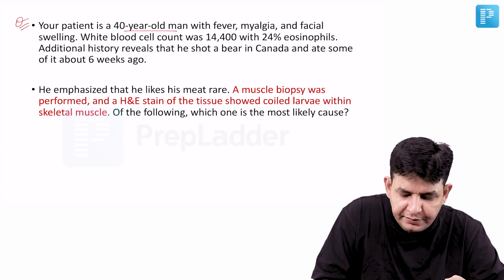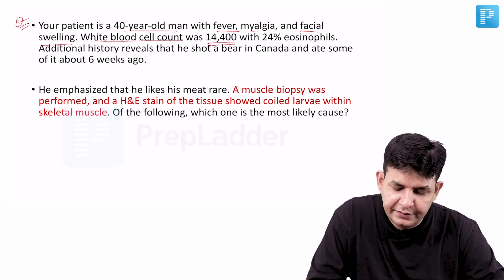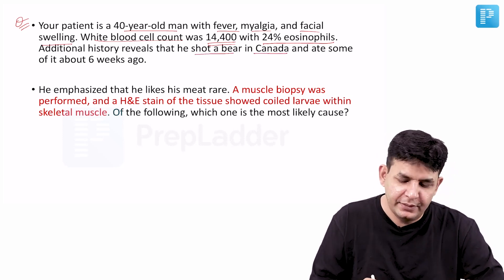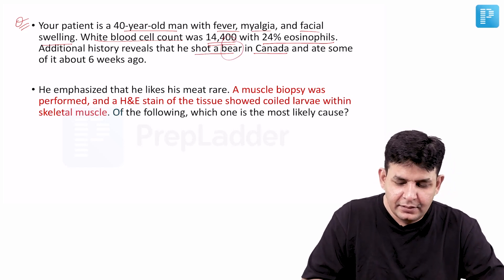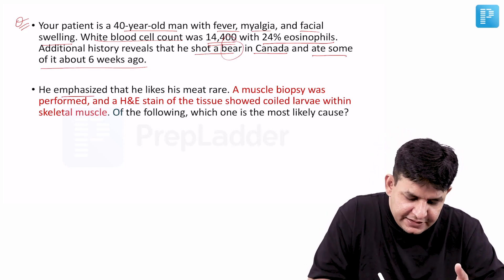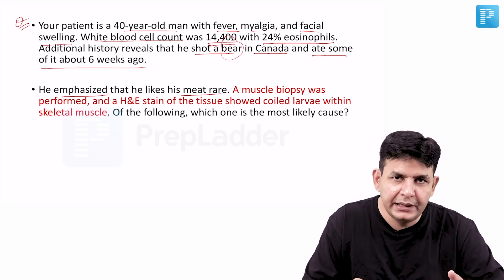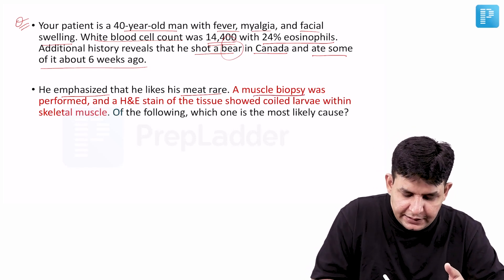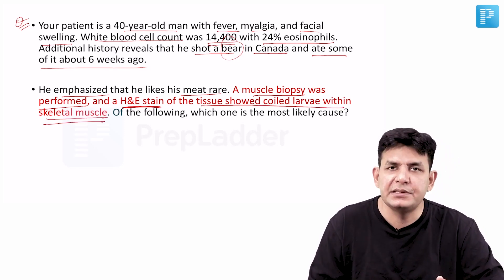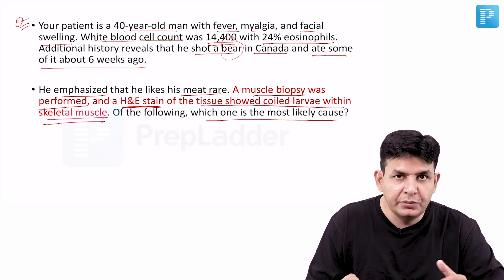Moving to another question: a 40-year-old man presents with fever, myalgia, and facial swelling. His white blood cell count is 14,400 with 24% eosinophils. Additional history reveals that he shot a bear in Canada and ate some of its meat about six weeks ago. He liked his meat rare. A muscle biopsy was performed and the H&E stain of the tissue showed coiled larvae within the skeletal muscle. Which of the following is the most likely cause?